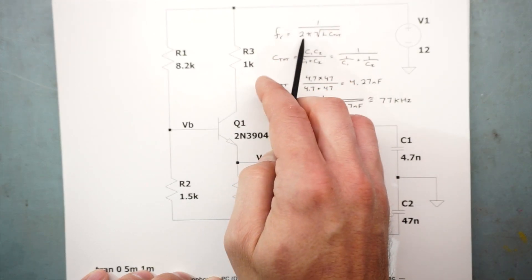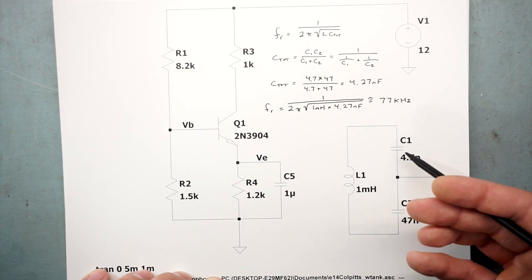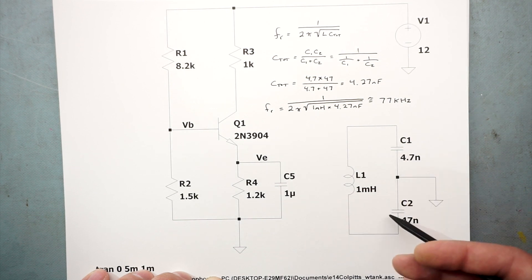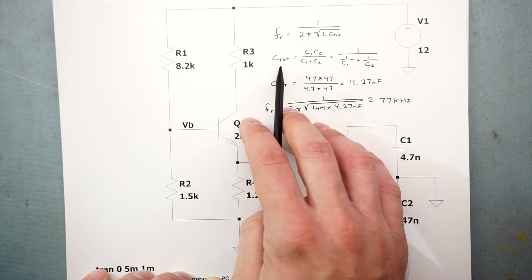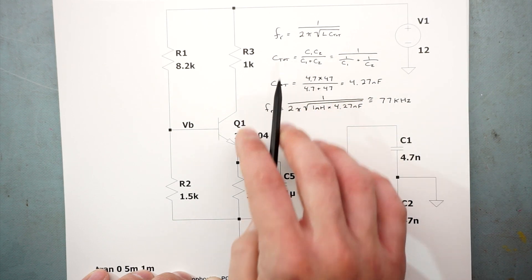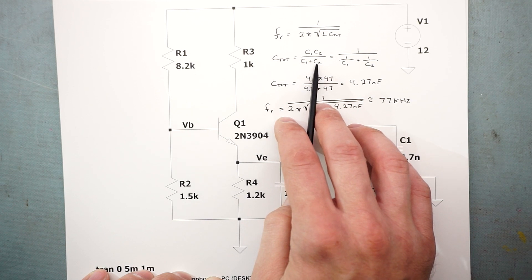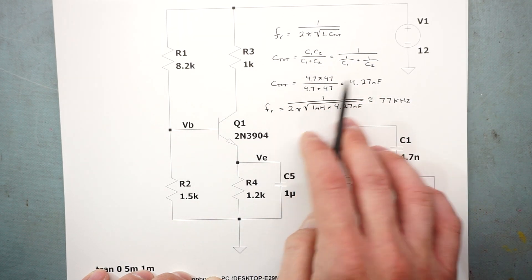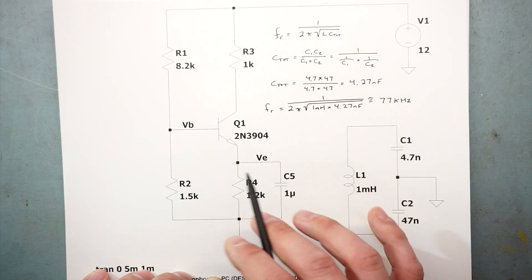Resonant frequency is equal to one over two pi the square root of L times C. Like I just said, we're going to have to calculate these two capacitors in series. They don't add up. It's a little more complicated than that. So we need to use one of two formulas. We can find the total capacitance here by doing the product over the sum of the two values, or we can use the one over one over rule. I'm going to go ahead and use the product over sum formula.